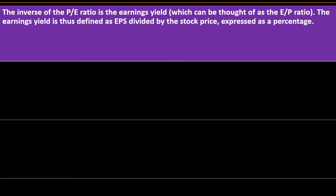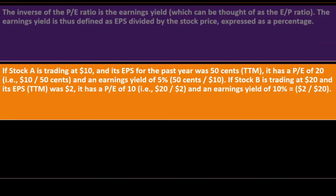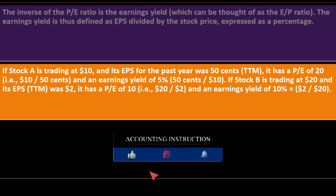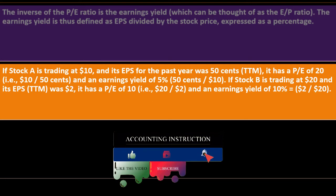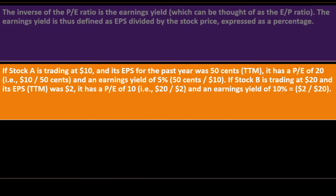PE versus earnings yield: The inverse of the PE ratio is the earnings yield, which is E over P — earnings divided by price. The earnings yield is defined as EPS divided by the stock price, expressed as a percent. For example, if Stock A is trading at $10 and its EPS for the past year was $0.50 TTM, it has a PE of 20 (10 divided by 0.50) and an earnings yield of 5% (0.50 divided by 10).